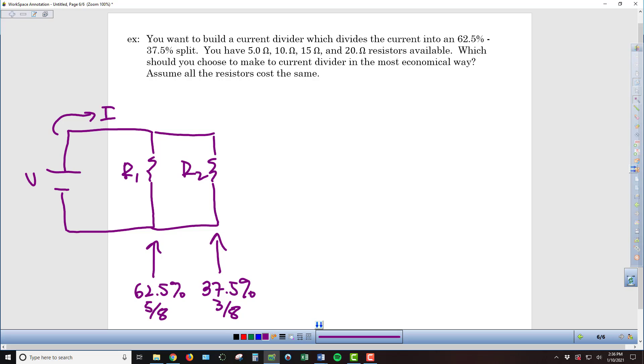So we need to somehow pick from our collection of 5, 10, 15, and 20 ohm resistors to end up with this split of the current. 62.5% flowing through that first part of the loop, and then 37.5%, 3/8 flowing through the second part of the loop. So from our equations that we established previously, we've got I1, the current flowing through resistor 1.